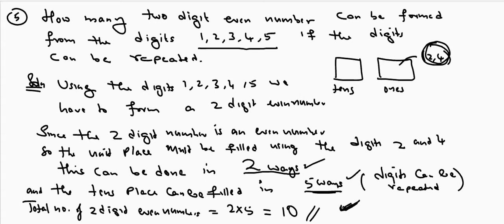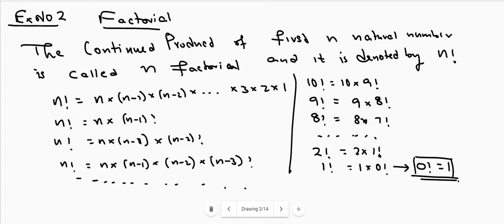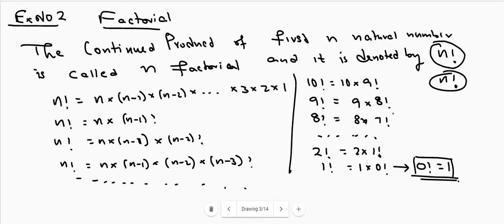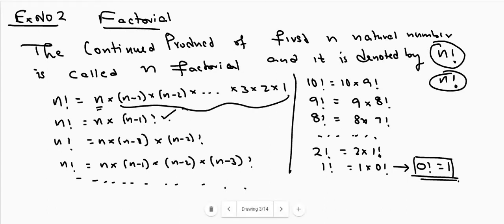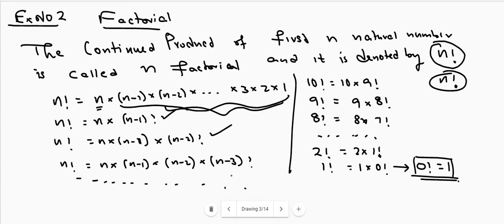Now we shall move to the second exercise, that is factorial. The continued product of the first n natural numbers is called n factorial, denoted as n!. So n! equals 1 × 2 × 3 × 4 × ... × (n−2) × (n−1) × n. We can also write n! as n × (n−1)!, or n × (n−1) × (n−2)!, or n × (n−1) × (n−2) × (n−3)!, and so on.